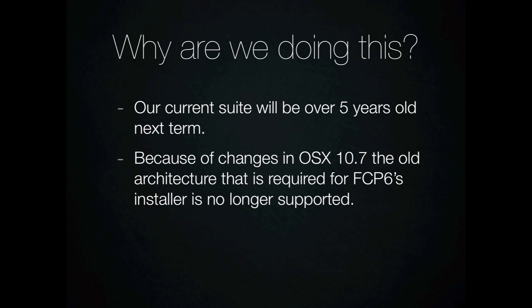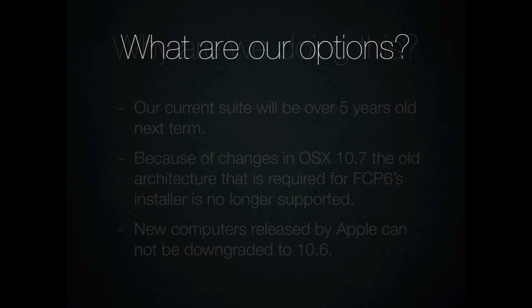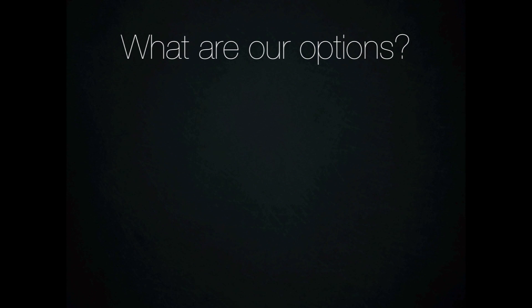In 10.7 and above, they're just using Intel-based code. The installer for Final Cut Pro Studio 2 or Final Cut Pro 6 is basically PowerPC code. We can't stay on Snow Leopard, which is what we're currently running, any longer because Apple's new release computers cannot be downgraded to 10.6. So the big question is, we're not going to move away from Macintosh — what are our options?